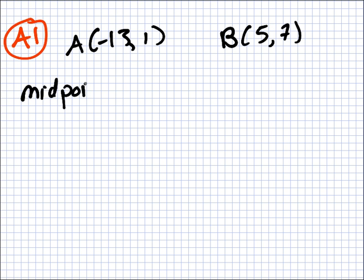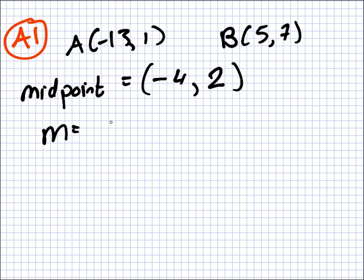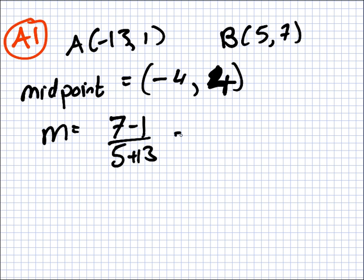So the midpoint is: minus 13 plus 5 is minus 8 over 2, which is minus 4. And then 1 plus 7 is 8 over 2, which is 4. And then the slope M of AB is 7 minus 1 over 5 plus 13, which is 6 over 18, which is 1 over 3.